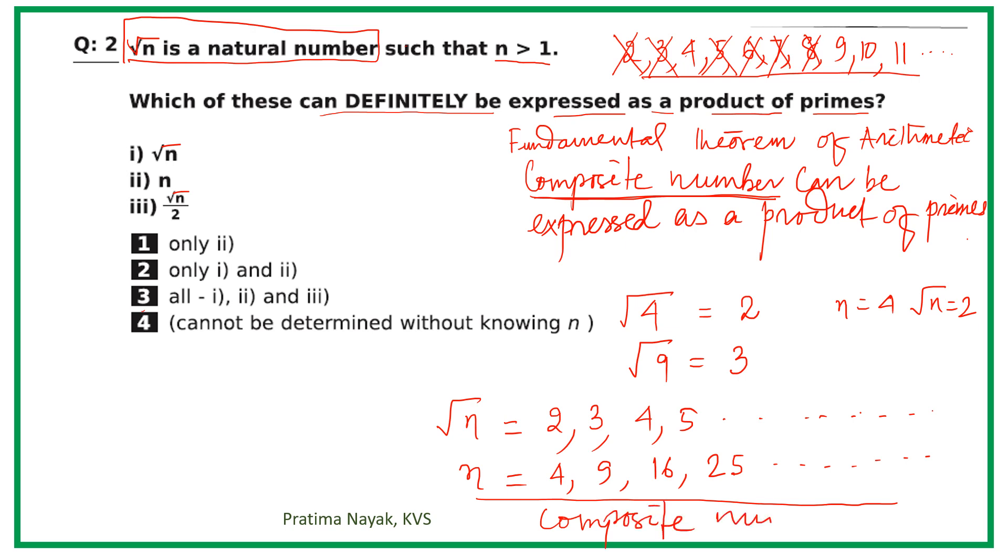Composite numbers can be expressed as product of primes. So option n is always true. Now coming to square root of n.